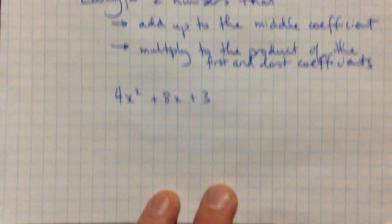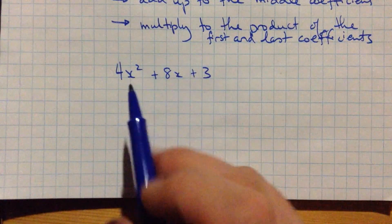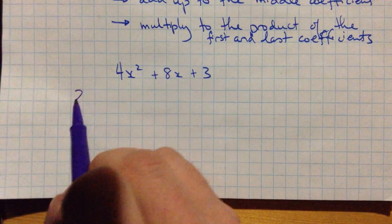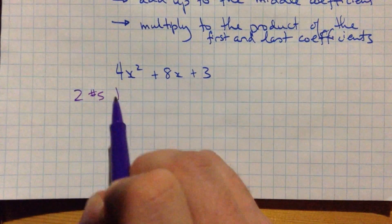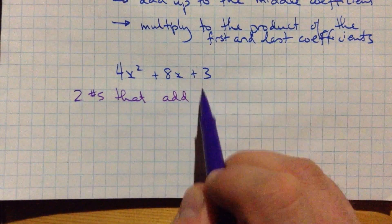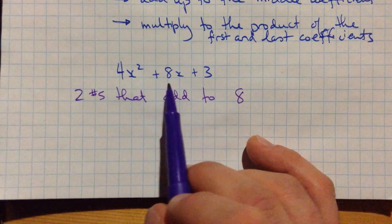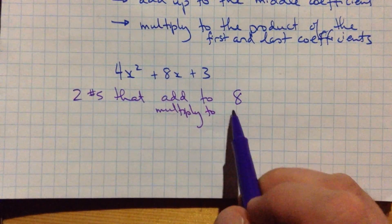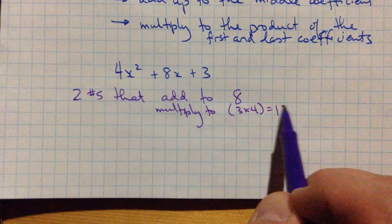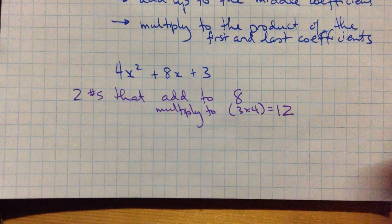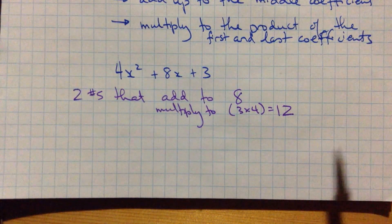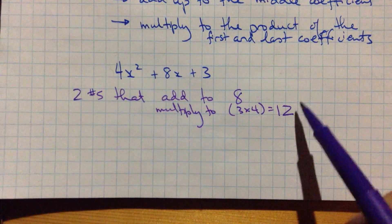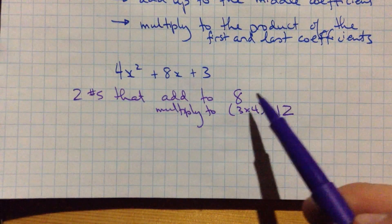4x squared plus 8x plus 3. So we're not quite done here yet in how to finish with all this. So, I want to find a number that, two numbers rather, so two numbers that add or sum to 8, that they add up to 8, and they multiply to the same thing as 3 times 4, which is 12. Two numbers that multiply to give me 12, but add to give me 8.